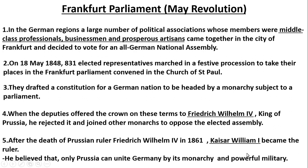When the elected parliament members gathered, they offered the crown to Frederick Wilhelm IV. However, the king rejected the crown, because the German National Assembly members had drafted a constitutional framework for the German nation in which the king would only be a nominal ruler, without real powers. Whatever rights and powers there were would belong to the National Assembly. Therefore, Frederick Wilhelm IV rejected the crown, and in this way the efforts to unify Germany through the Frankfurt Parliament failed. This incident is known as the March Revolution.